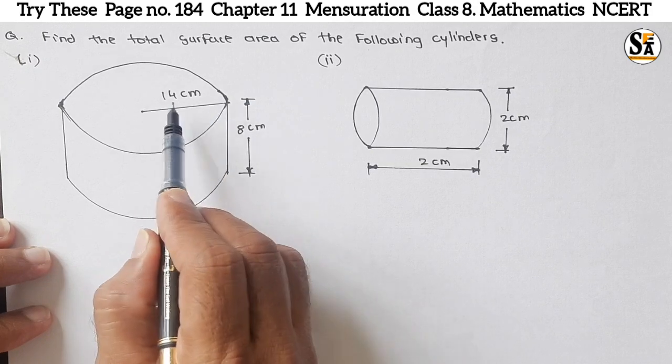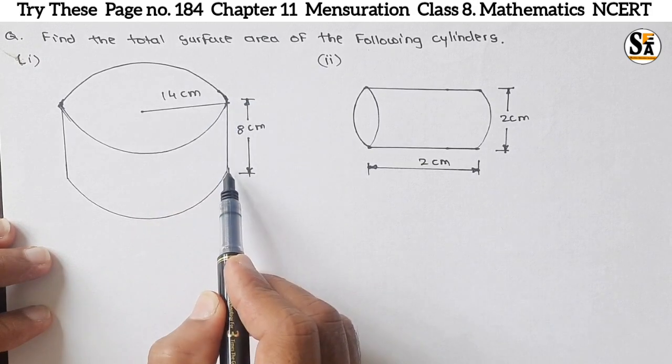In the first cylinder, the radius is given as 14 cm and height is given as 8 cm.